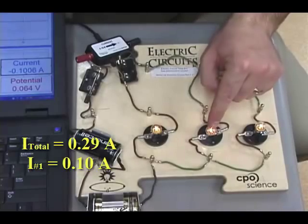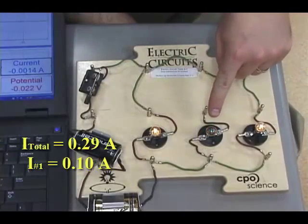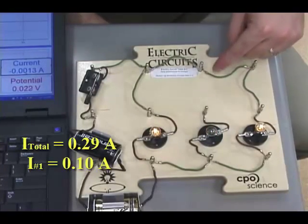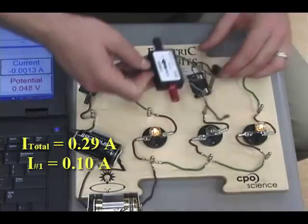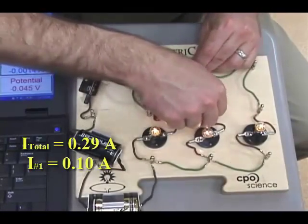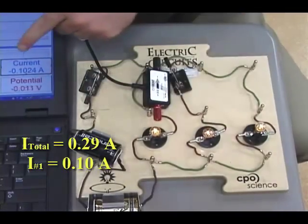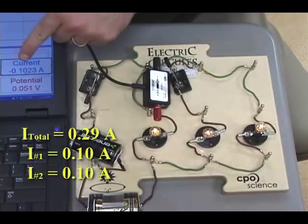What about the current traveling to lightbulb two? Wait a minute. Why isn't lightbulb two lit? Because it's an open circuit. That means I can measure current and it reads 0.10.